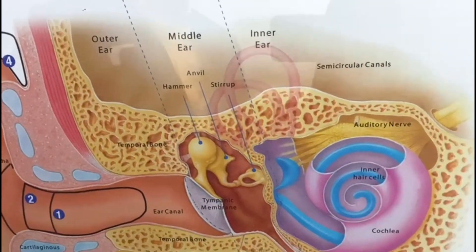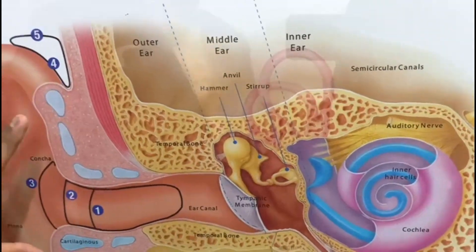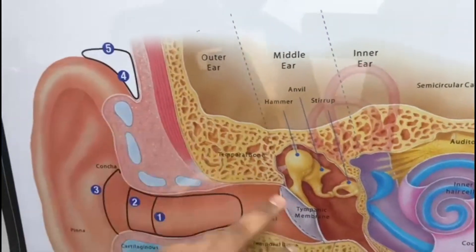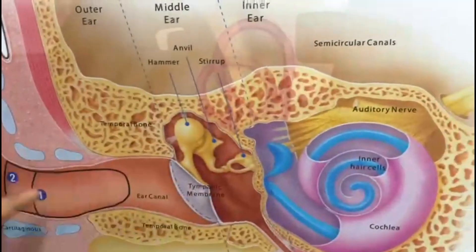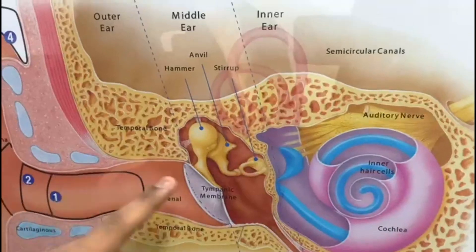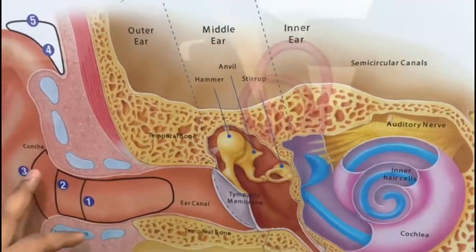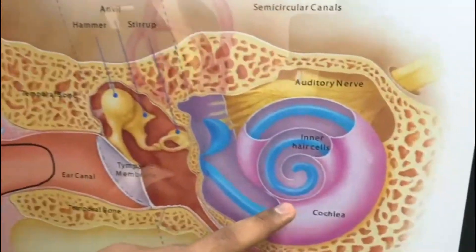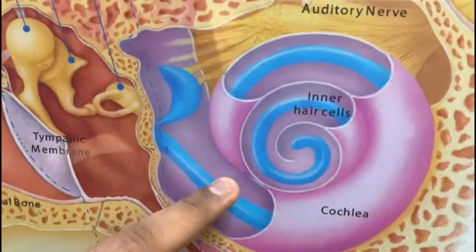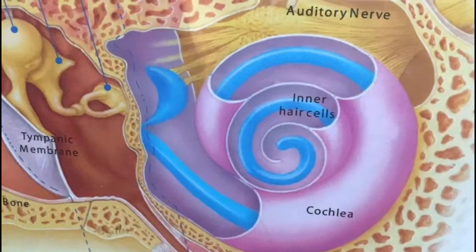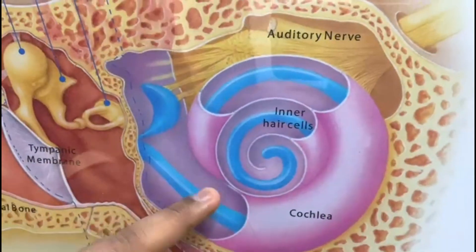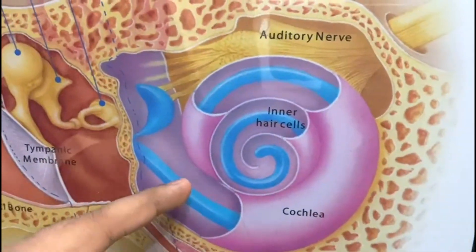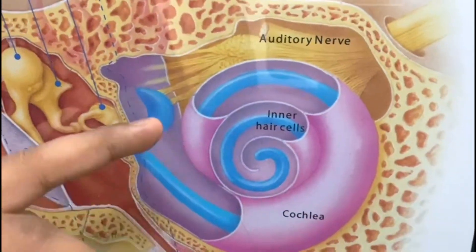The outer ear and middle ear are usually dealt with by an ENT specialist, while inner ear problems — which include hearing loss and deafness — are dealt with by a professional audiologist.